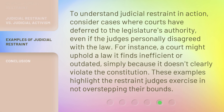To understand judicial restraint in action, consider cases where courts have deferred to the legislature's authority, even if the judges personally disagreed with the law. For instance, a court might uphold a law it finds inefficient or outdated, simply because it doesn't clearly violate the Constitution. These examples highlight the restraint judges exercise in not overstepping their bounds.